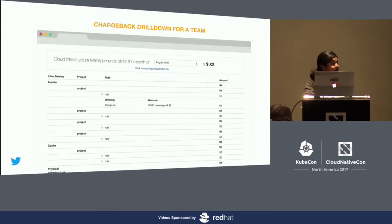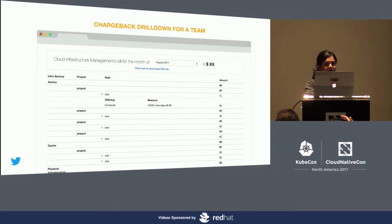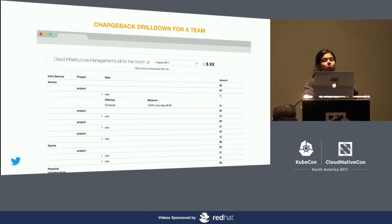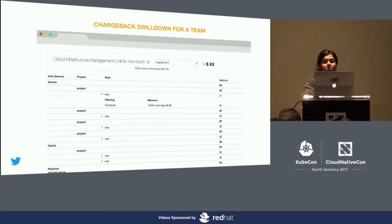Although the team-level view gives a good understanding of how a team is spending on each infrastructure service, it is not sufficient when you want to work on optimization projects. So we created a drill-down view where they get a unique view of project-level spend, drilling down further to client identifiers. It is much more effective for engineers to know the exact data set or job contributing to their spend.